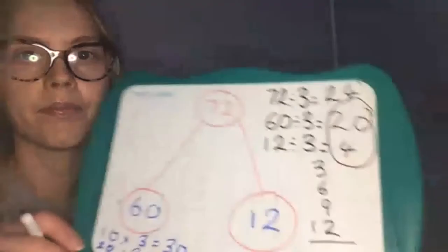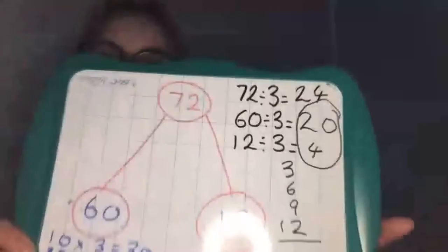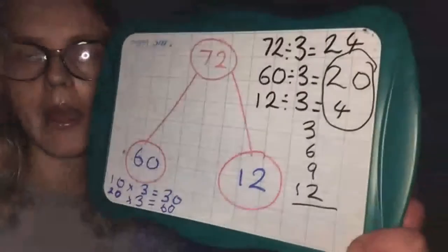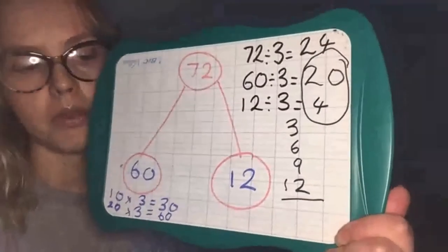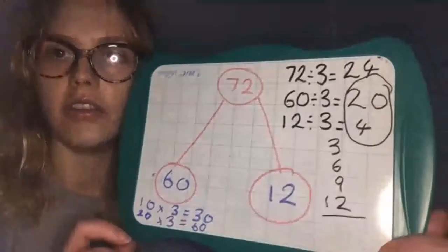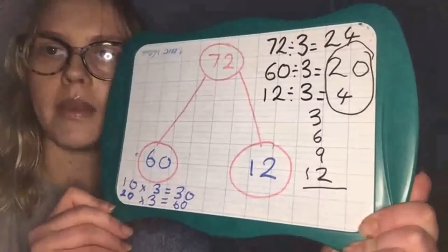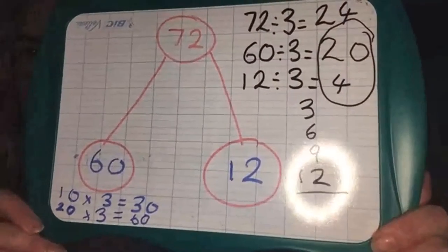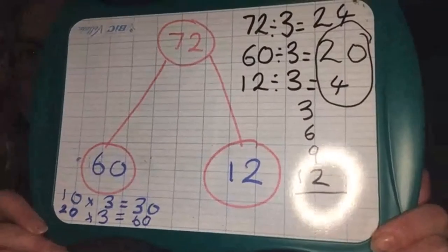What you need to do — and hopefully you thought of this — is add these two answers together. So you add together the 20 and the 4, and 72 divided by 3 is 24. This is how you can use partitioning and a part-whole model to help you work out a division. I'll leave it up there for a second so you can see it nice and clearly.